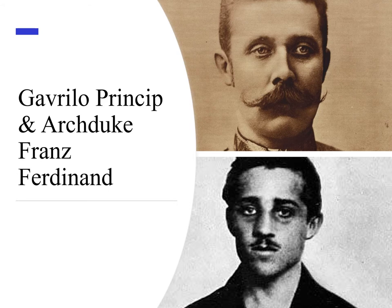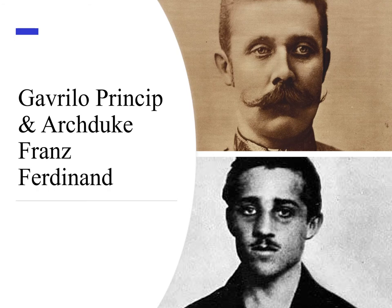They heard that Archduke Franz Ferdinand and his wife were going to visit Sarajevo in 1914, touring their new territory before meeting the mayor for lunch and leaving. The group saw their chance — they planned to throw a bomb into the car. They threw the bomb, missed the car, and it blew up the car behind. Franz Ferdinand was fine. He arrived at city hall furious. Eventually they calmed him down, had lunch, and the plan was to go straight back to the train station.